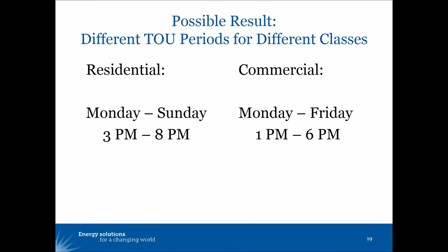The possible result of all of this is that you might have different TOU periods for different classes. The residential class peak demand period might be Monday through Sunday, 3 to 8 p.m., while the commercial class might be Monday through Friday, 1 to 6 p.m. because the commercial class does not have distribution constraints on weekends.